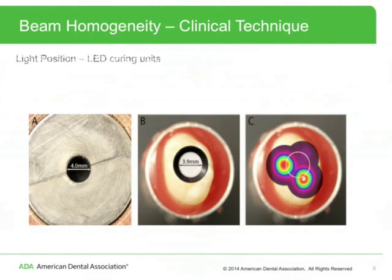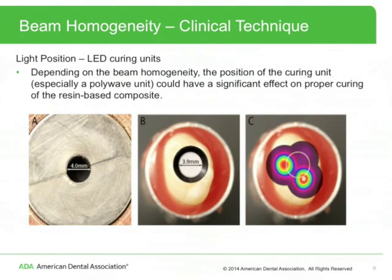Light position matters for LED curing units. Depending on the beam homogeneity, the position of the curing unit could have a significant effect on proper curing of the resin-based composite. Image A shows a depth of cure mold with its 4 mm inner diameter. Image B shows a 3.9 mm diameter irradiance probe used for radiant power measurements superimposed over a third molar. Image C shows the beam profile for one of the curing units superimposed over a third molar, with the white circle in the middle representing the irradiance probe.